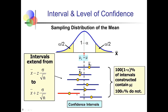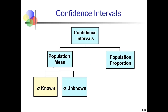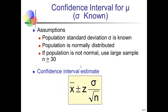We'll talk about confidence intervals for the population mean, estimating mu, and confidence intervals for the population proportion in Chapter 8.3. We'll start by assuming we know the true population standard deviation. If the population is normally distributed, or if it's not normally distributed but we have a large sample size so the central limit theorem applies, we can use the confidence interval formula.